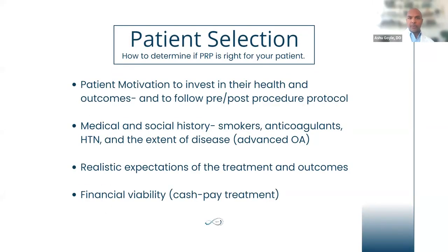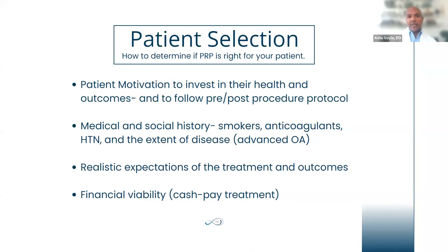Patient selection is also very important when it comes to outcomes with PRP. We want patients who are motivated to invest in their health. In my practice, I have a strict pre- and post-procedure protocol that I email to patients as a PDF before they even decide if they want PRP. Out of a few hundred procedures I've done over the last two years, only a few decided the pre-procedure protocol was too rigorous. But that's a good thing — these procedures can take time, and results aren't always immediate like with corticosteroids. It's important to understand which patients are appropriate based on their medical and social history.